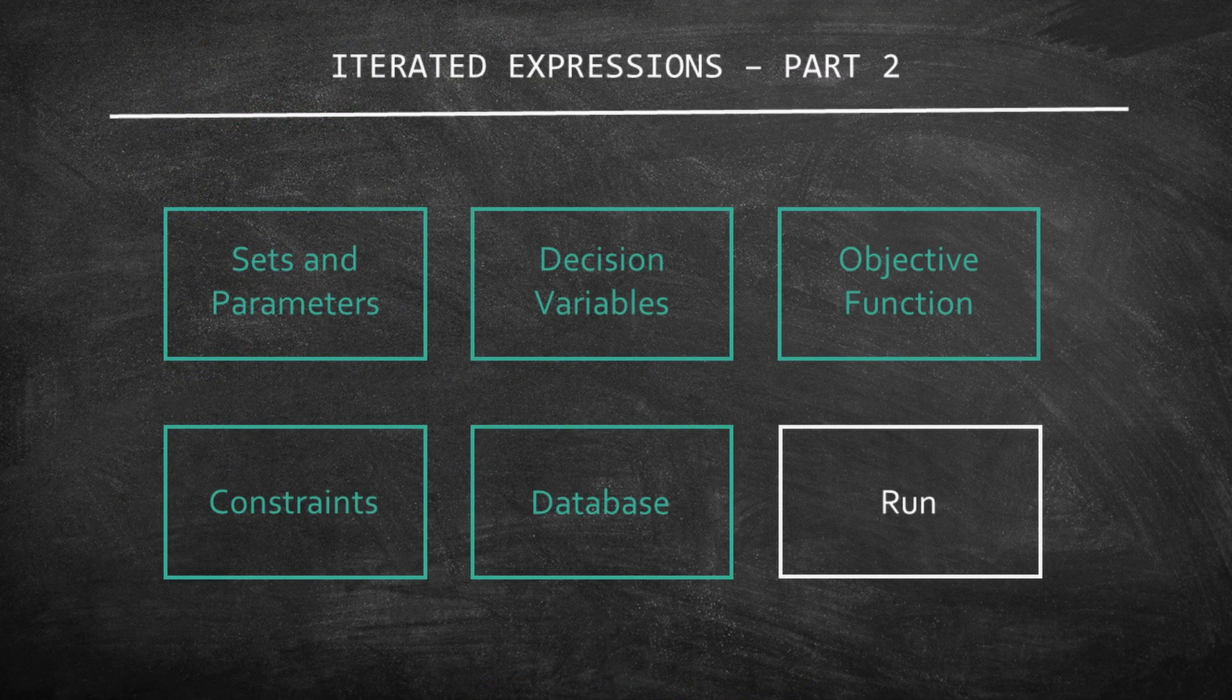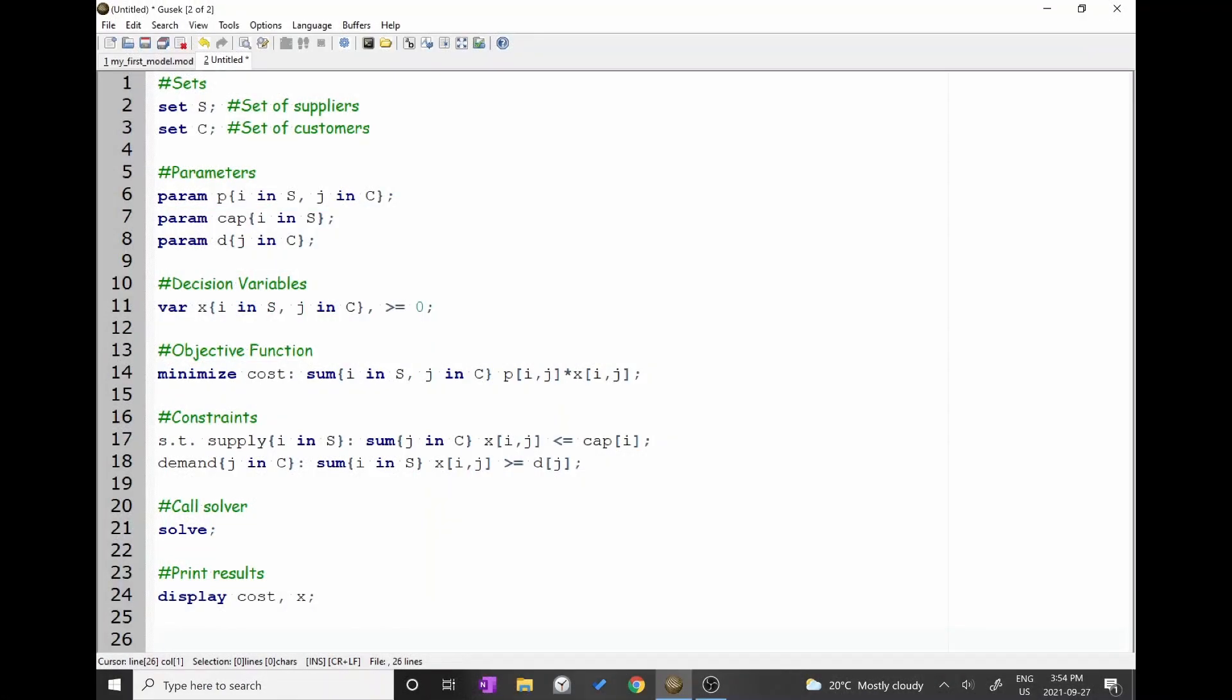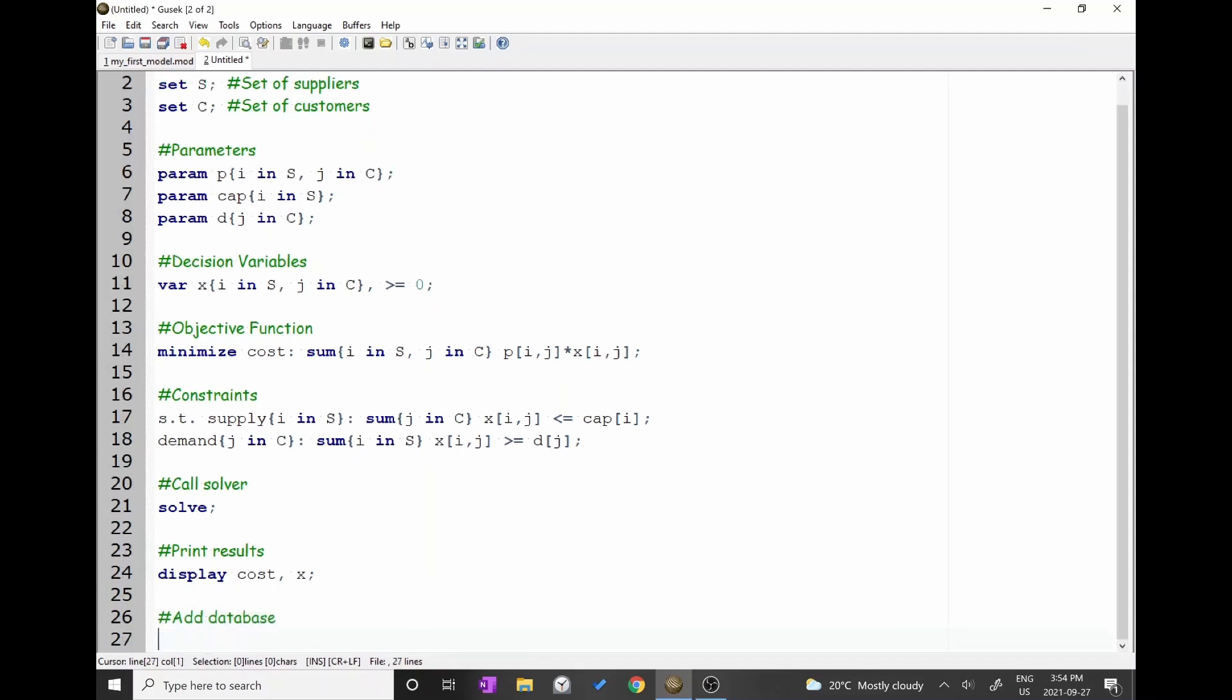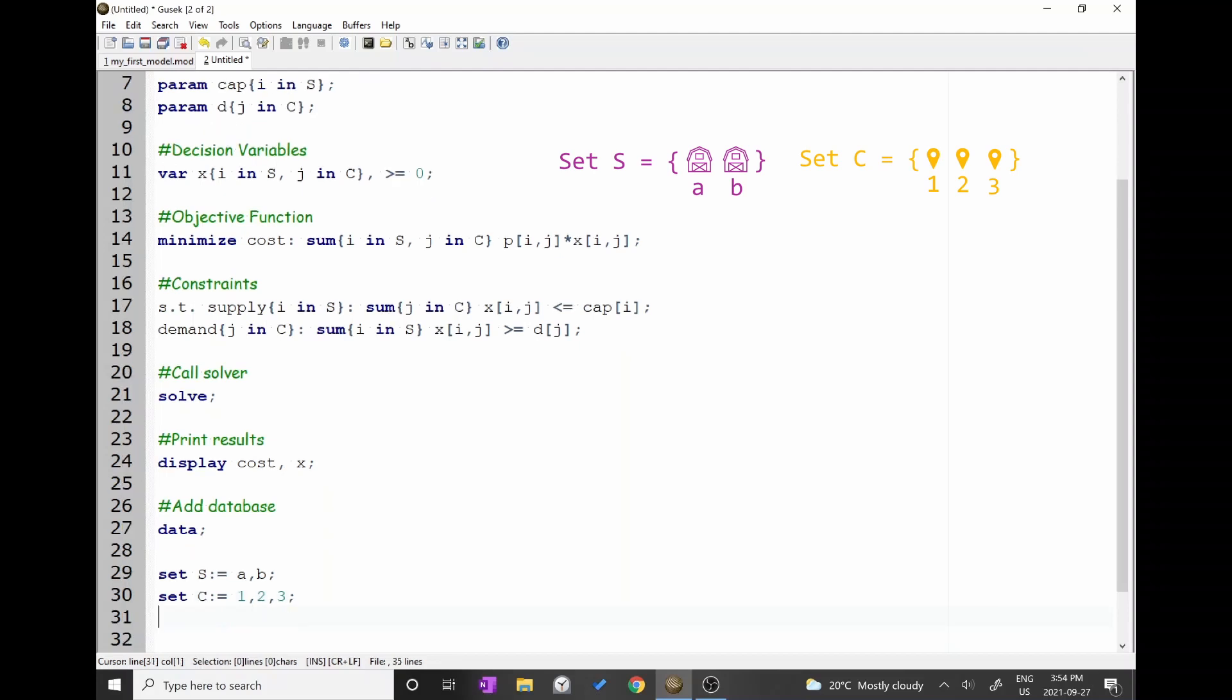Let's create a data section in our code. Type data semicolon. Then, let's declare the elements in each one of the sets. First, type set capital S, then colon and equal, then A, B, semicolon. Second, type set capital C, then colon and equal, and 1, 2, 3, semicolon.